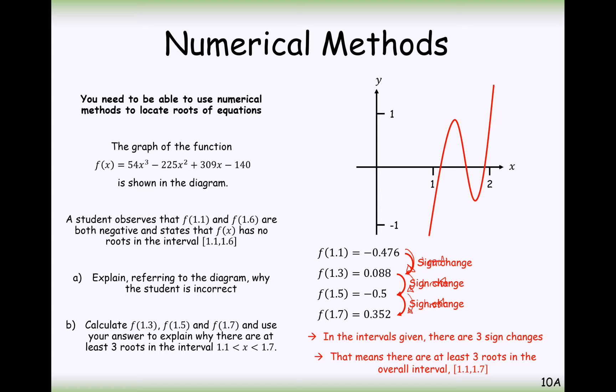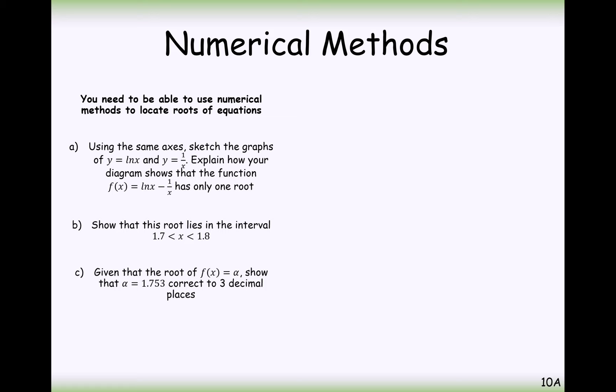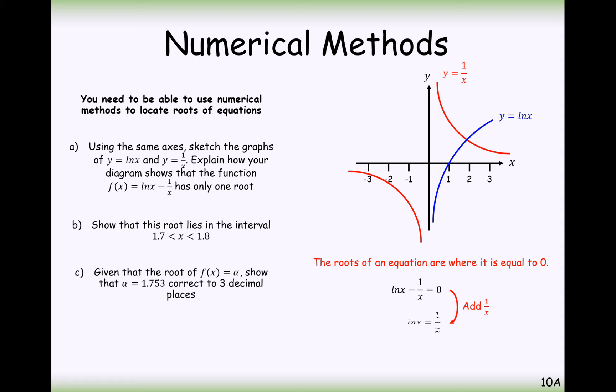Right then, a slightly more complicated question here, and something more like what you're going to be facing. Using the same axis, sketch the graphs of y equals ln x and y equals 1 over x. Explain how your diagram shows that the function ln x minus 1 over x has only one root. So that's the 1 over x graph, that's the ln graph. Now, how can we explain that this function here has only one root? Well, a root is found if we set the two equations equal to each other from our graphs. And we can rearrange the graphs being equated equal to each other by subtracting the 1 over x onto the other side.